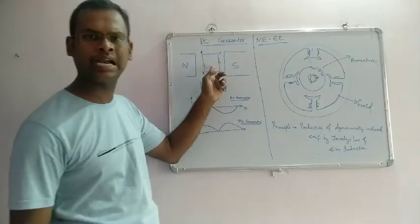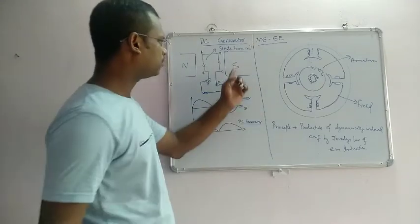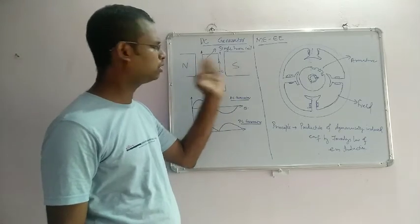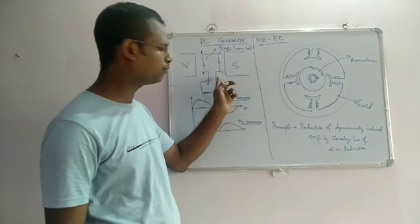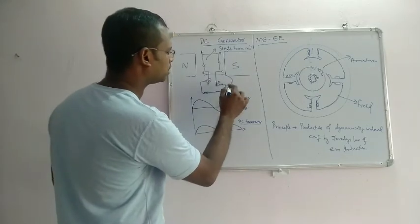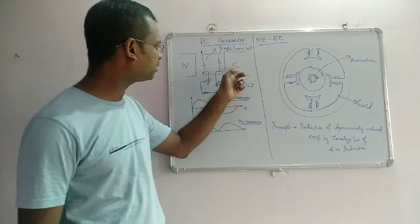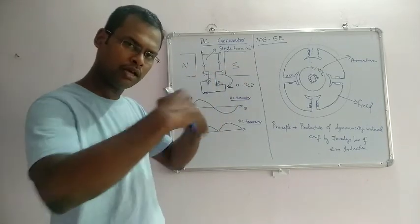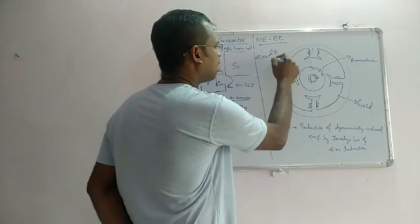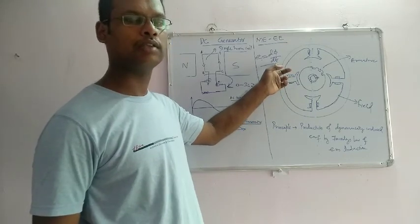We use a single turn coil placed in the armature. A uniform magnetic field is supplied by the magnet. We rotate this coil 360 degrees. As the coil rotates in the magnetic field, the flux changes. According to Faraday's law, EMF = dΦ/dt. When the flux changes, an EMF is induced.